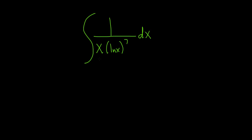In this problem, we have to integrate 1 over x times the natural log of x to the 7th power. So to do this problem, we're going to start by trying to do a u substitution. We'll let u be equal to the inside piece on the bottom, so the natural log of x.